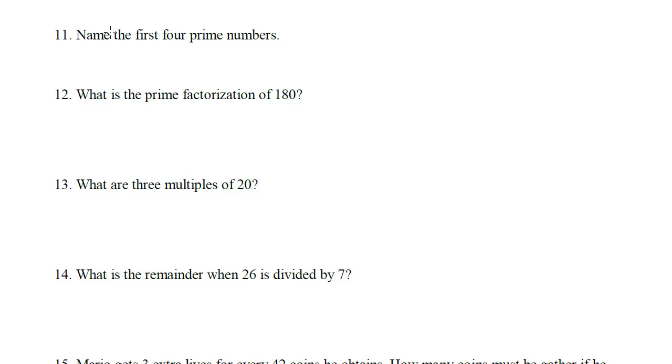Now for numbers 11 through 20. Name the first four prime numbers. Prime numbers are numbers that are only divisible by 1 and itself. Remember 2 is the first prime number. Even though it's even and the only even prime number, it's still the first prime. Then the next prime is 3, 5, and then 7.